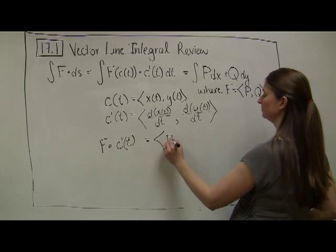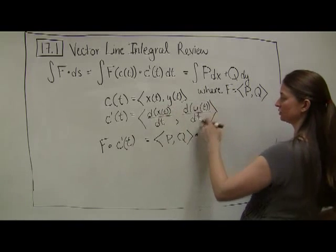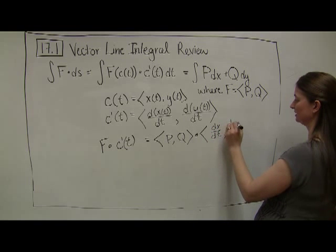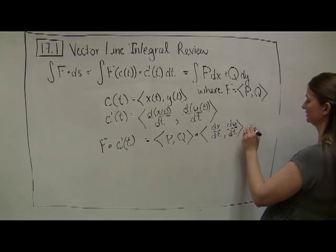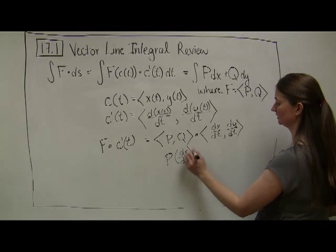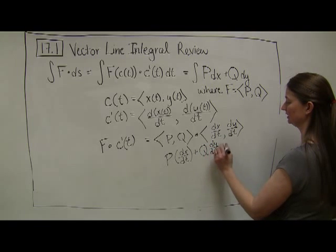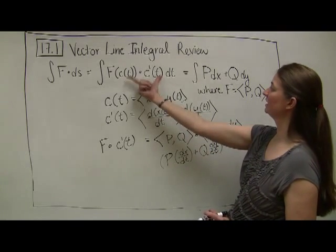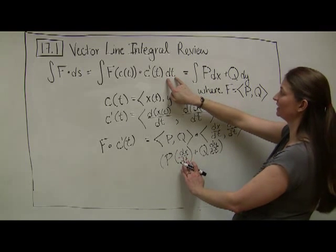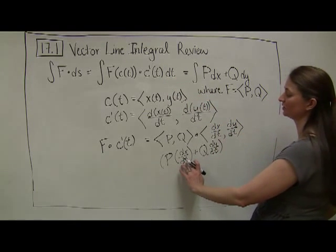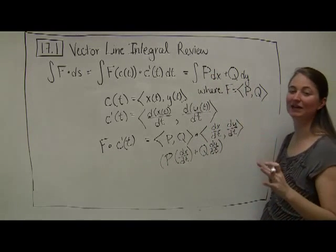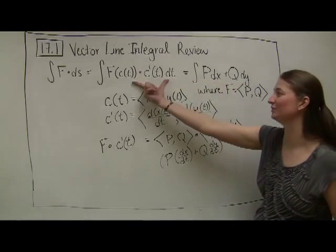Consider the dot product of f dotted with c'(t). I can think of this as (P, Q) dotted with (dx/dt, dy/dt). I end up with P(dx/dt) plus Q(dy/dt). If I plug this into the integral, the differentials with respect to t essentially eliminate one another, and I end up with P dx plus Q dy.